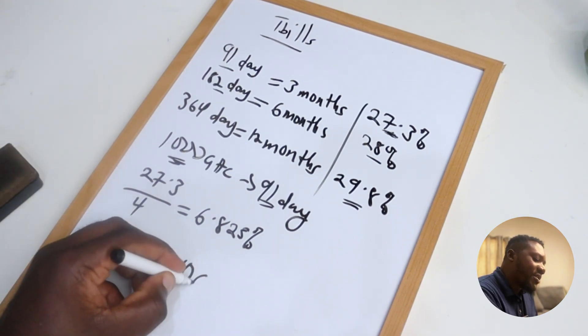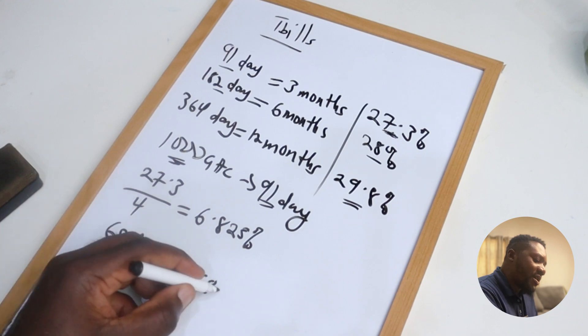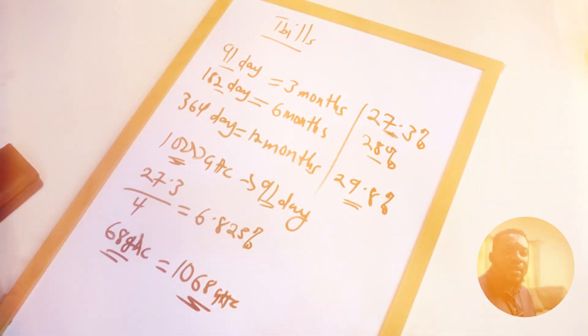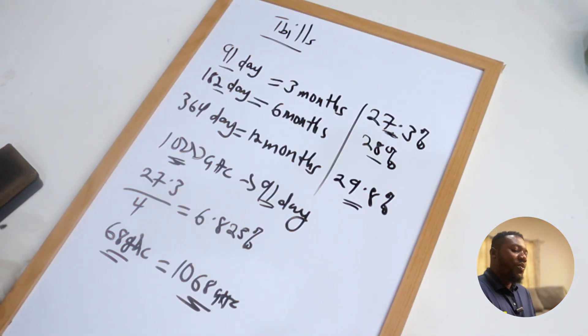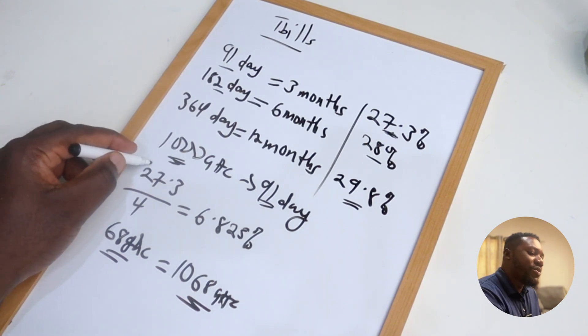So if you add this to your capital, then you're going to be paid 1,068 Ghana cedis. Do you get it?